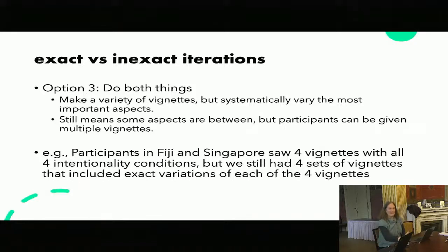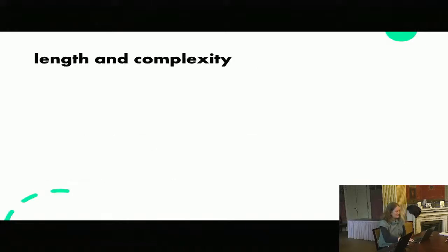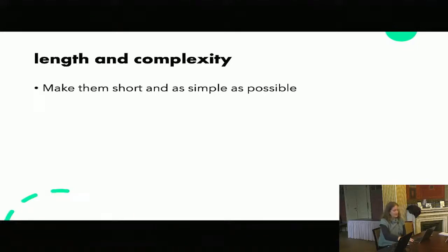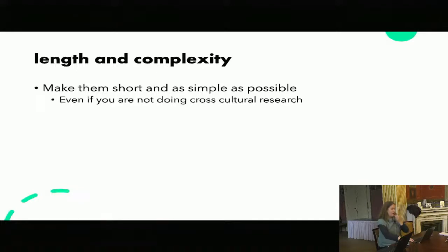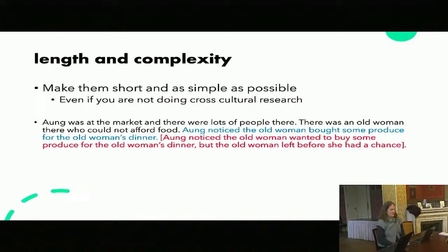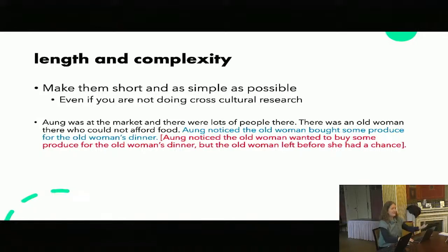One of the things I've learned is that making these as short as possible is really important, using very simple language. Even if you're not doing cross-cultural research — particularly if you're doing them online — people get really bored of reading your stories really quickly. If they're more than a couple of sentences long, people just tune out. This is a nice short one we used in a study on karma: 'Aang was at a market where there were lots of people. There was an old woman who couldn't afford food. Aang noticed the old woman brought some produce for the woman's dinner' — as opposed to the other version where he wanted to do it but didn't actually succeed.